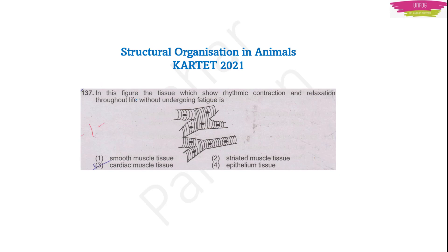What was this question? The question asks: in the figure, the tissue which shows rhythmic contraction and relaxation throughout life without undergoing fatigue is — what is it? In simple language, there is some tissue in our body that shows regular rhythmic contraction and relaxation throughout life without getting tired. Undergoing fatigue means getting tired, but there is a muscle which doesn't get tired and works continuously. So what muscle is it? Let's look into the options.